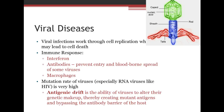Some immune responses to viruses include interferon, certain antibodies, and macrophages. The mutation rate of viruses is very high, especially for organisms like HIV. Antigenic drift refers to the ability of viruses to alter their genetic makeup and create mutant antigens that bypass the antibody barrier — allowing them to essentially change what they look like, as seen with flu viruses and cold viruses.